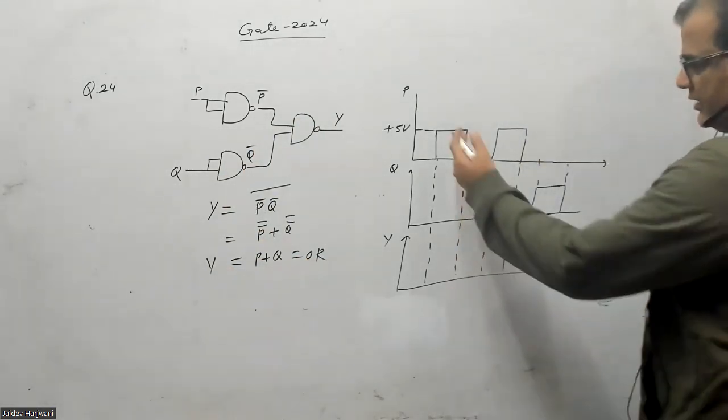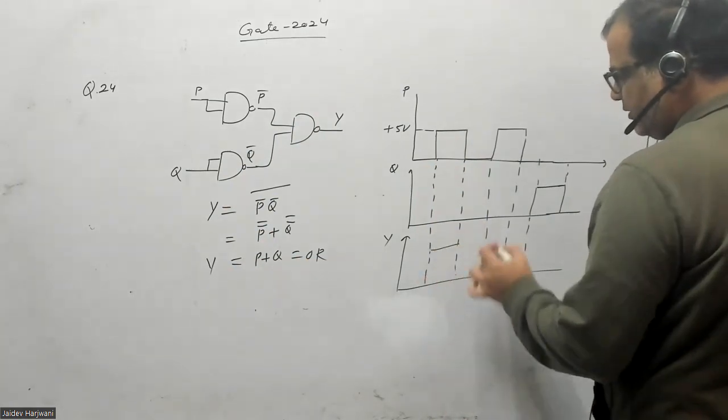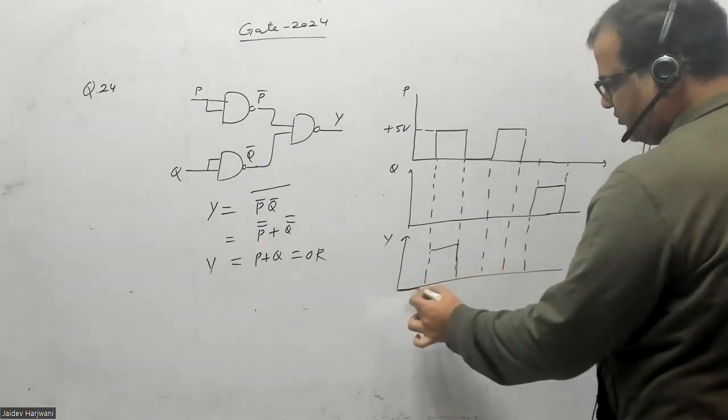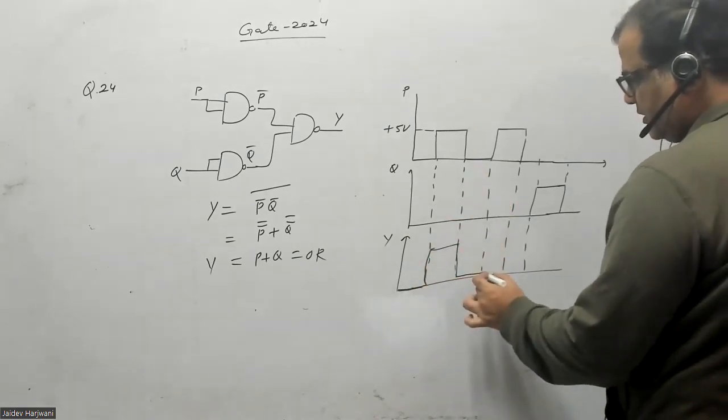Now if I find the output here, so this is 5, 0, this will give you 5. Similarly, 0, 0 will give you 0.